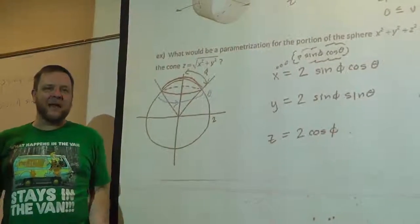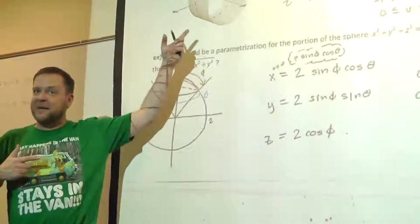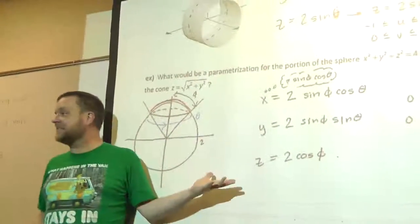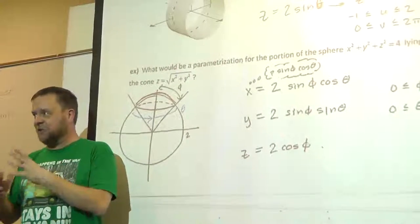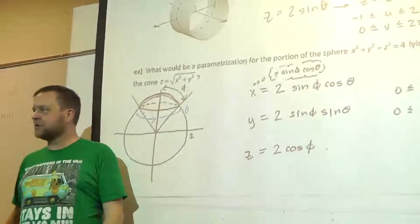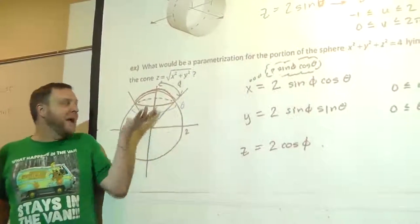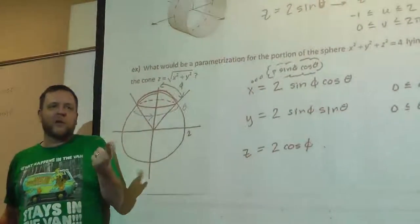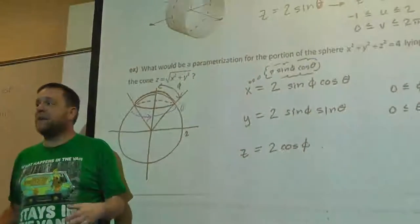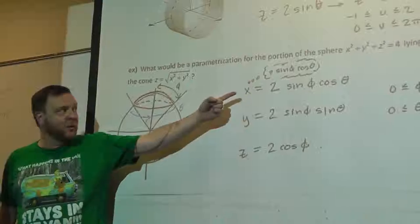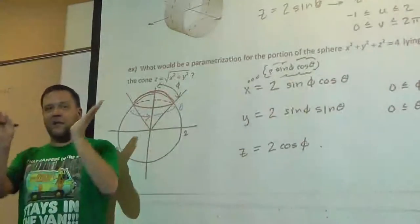Essentially, parameterization can boil down to sometimes using the polar or cylindrical coordinate system, as we did up to this example, and in rare cases pulling out spherical coordinates to represent patches of spheres restricted by other surfaces. The cool thing is you can't represent that restricted surface with one equation using only x, y, z coordinates — you'd have to type in x squared plus y squared plus z squared equals 4 for the sphere and also type in the cone equation separately.